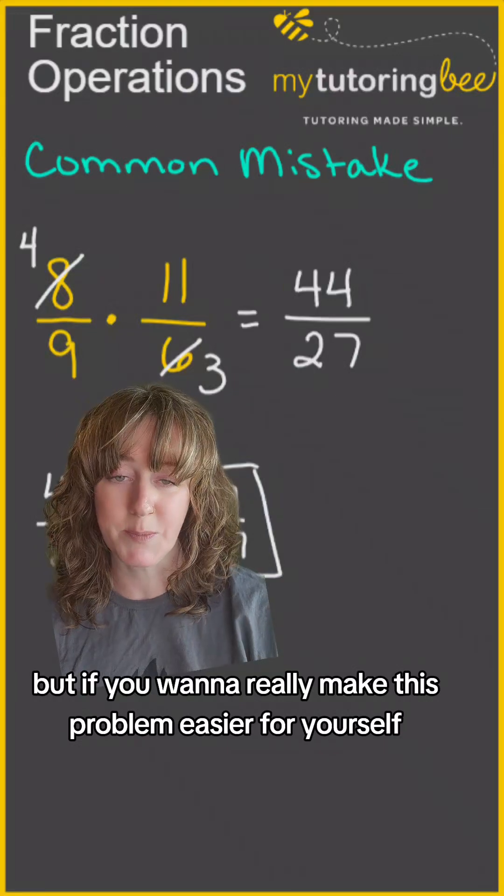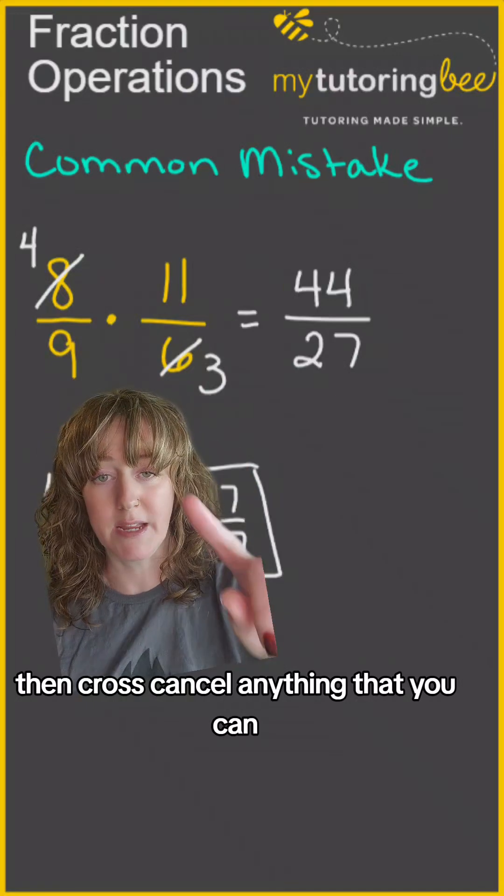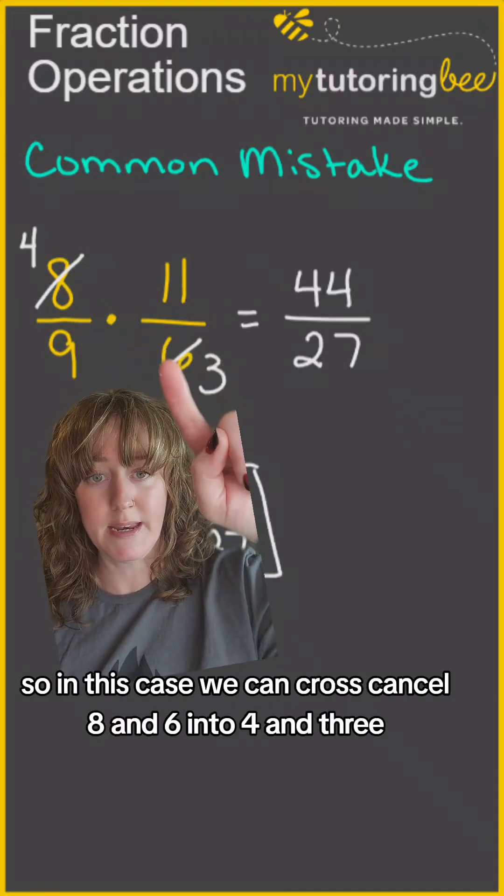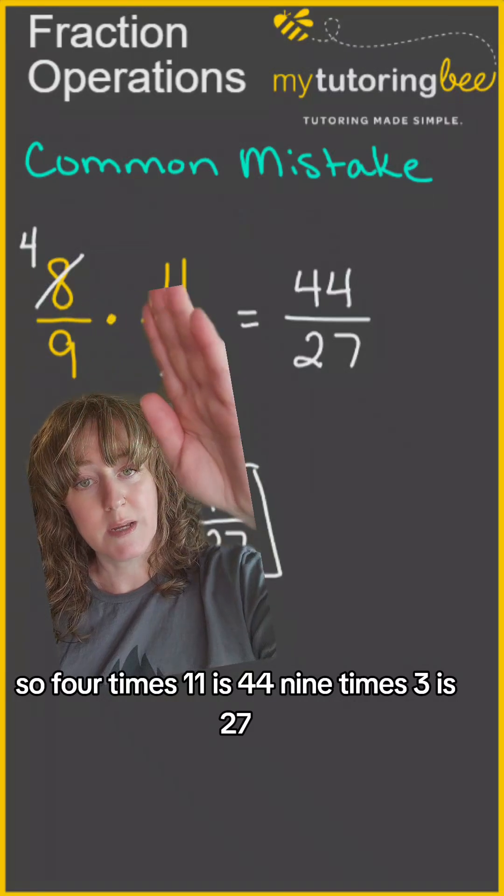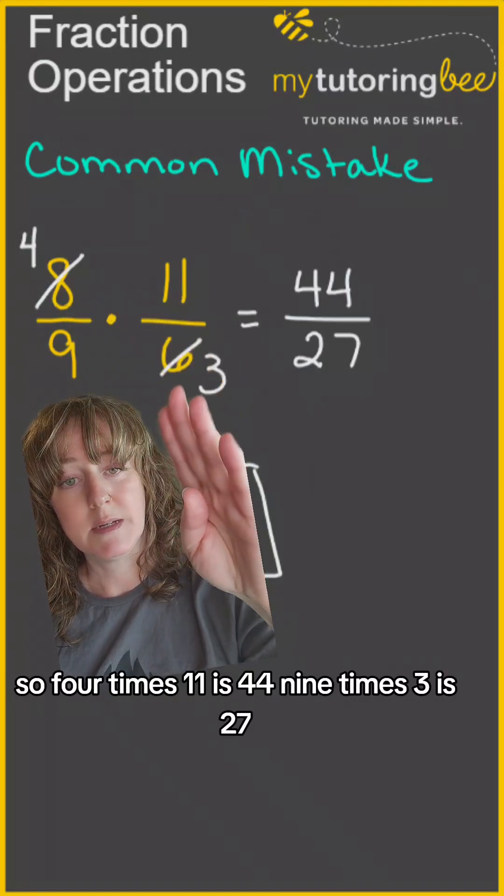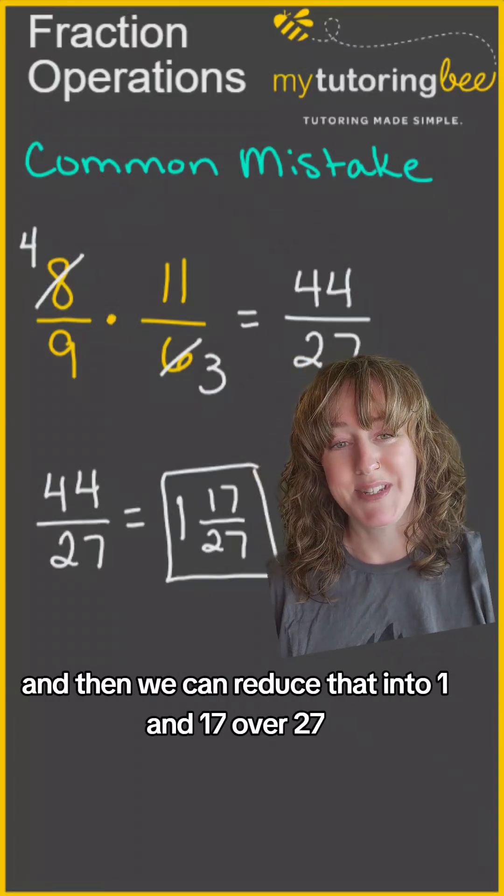But if you want to really make this problem easier for yourself, then cross-cancel anything that you can. So in this case, we can cross-cancel 8 and 6 into 4 and 3, which makes our number smaller to multiply. So 4 times 11 is 44, 9 times 3 is 27, and then we can reduce that into 1 and 17 over 27.